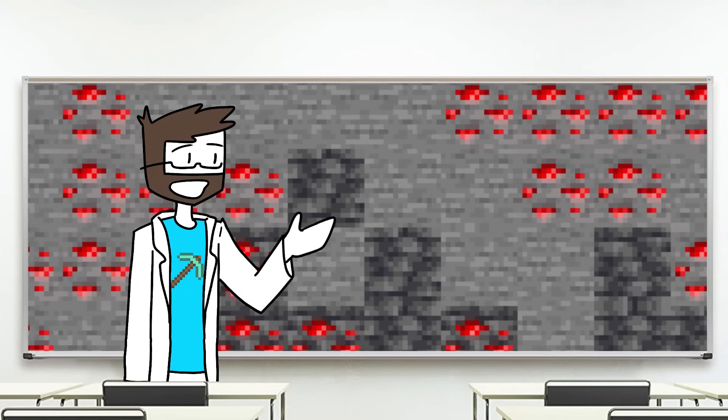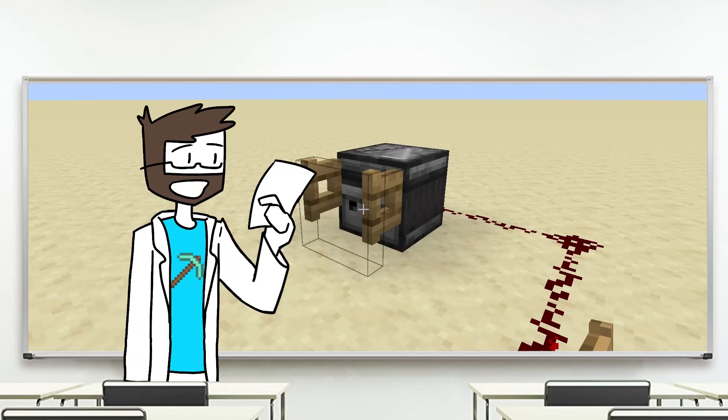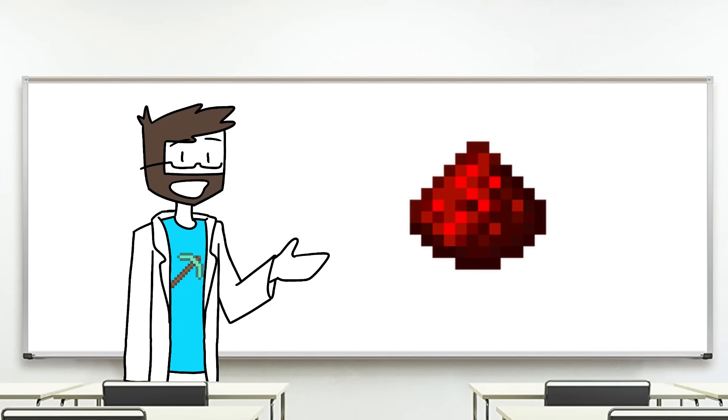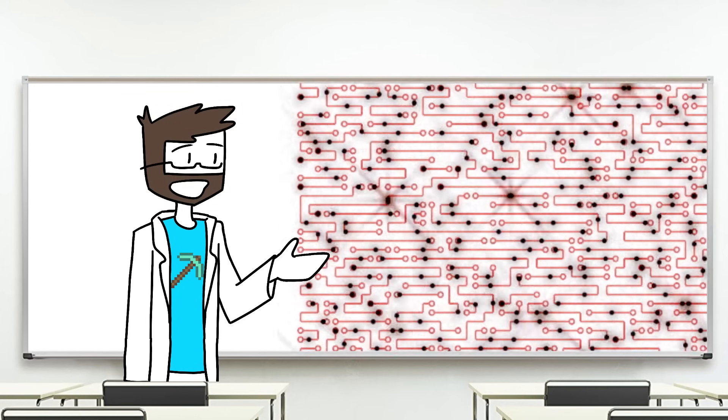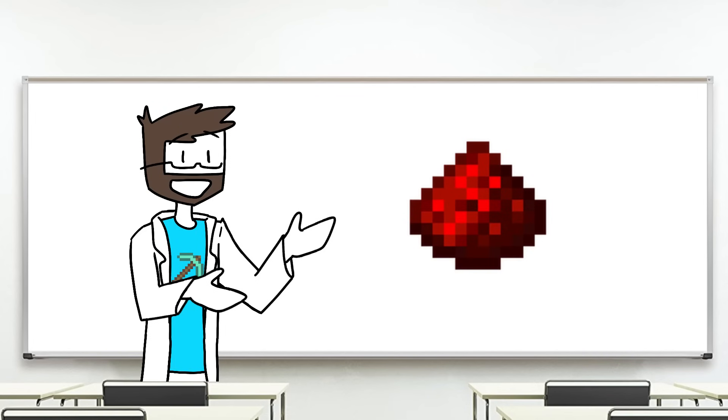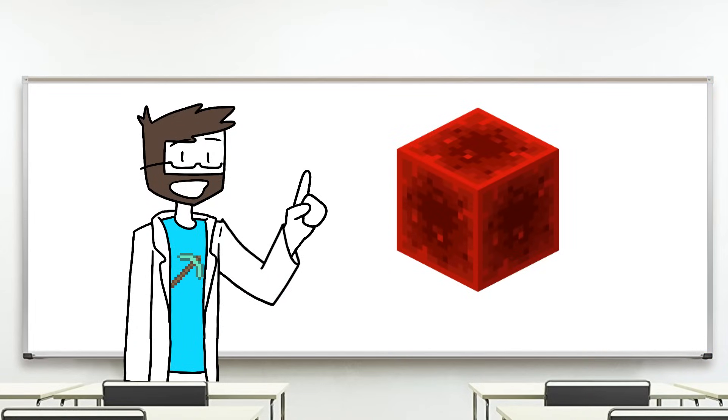Redstone is a resource found underground throughout Minecraft that is useful for all sorts of contraptions. Pistons, dispensers, autocrafters, observers. Basically, it provides a stand-in for the building blocks of most electronic devices in the real world. People have even used Redstone to build working calculators and computers. But I have a theory that it's a lot more powerful than just that.